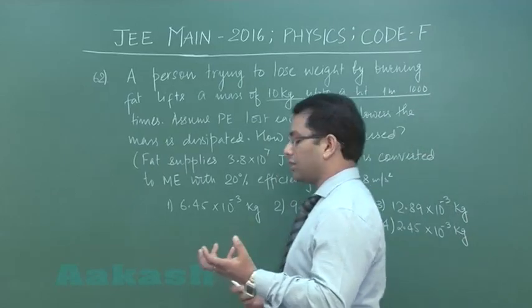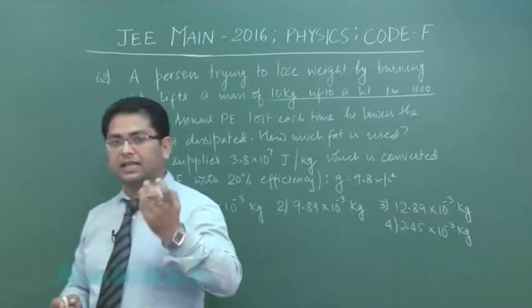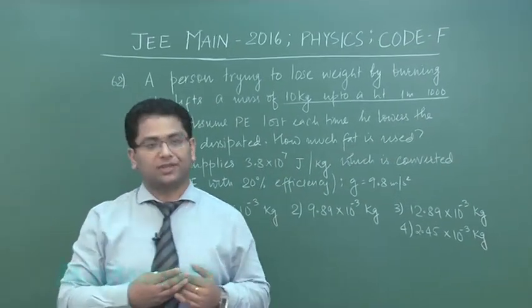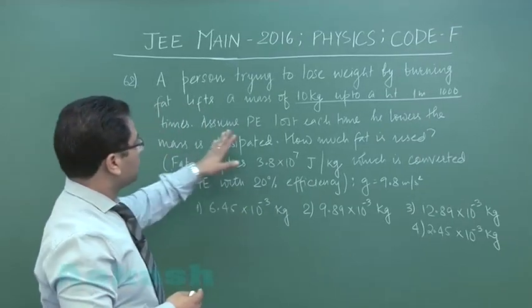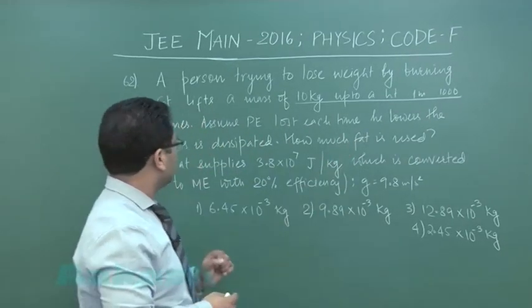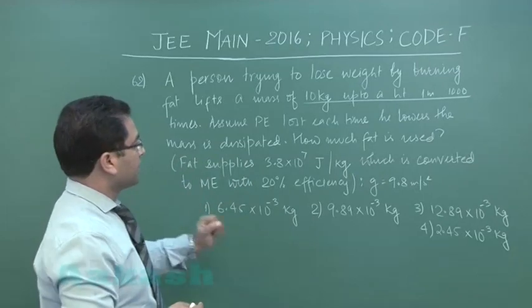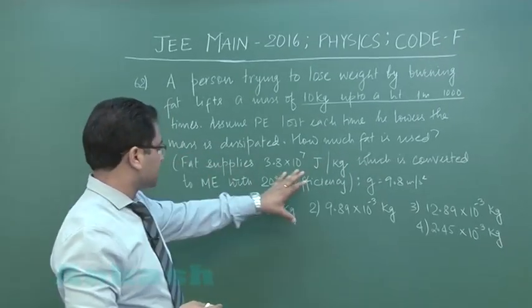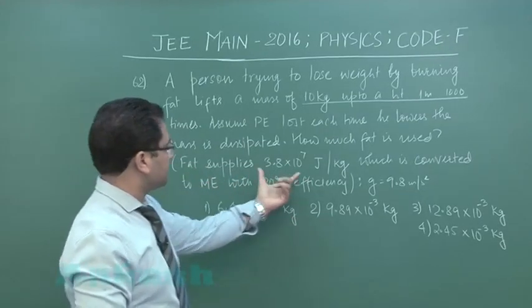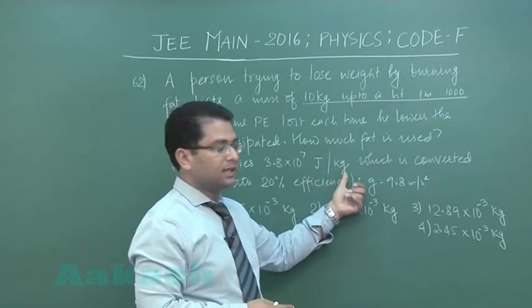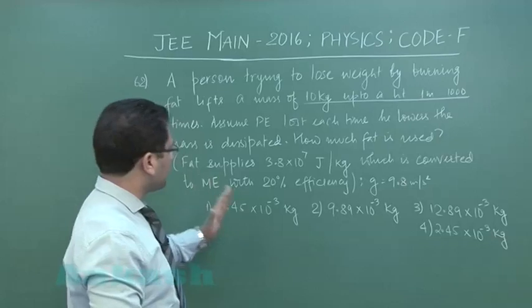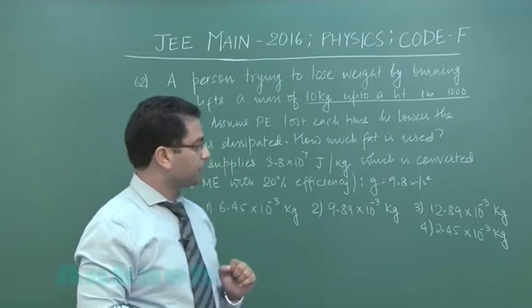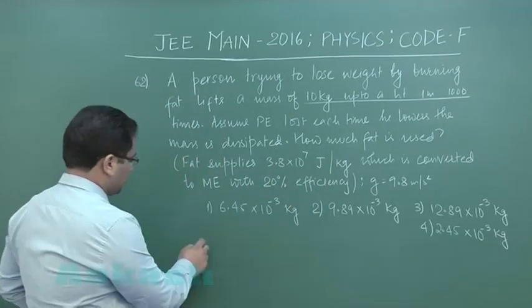A 10 kg block is being raised to a height of 1 meter, and the process is repeated for 1000 times. Assume potential energy lost each time he lowers the mass is dissipated. How much fat is used? The conversion part has been given here: fat supplies this much joules of energy per kg, which is converted to mechanical energy with 20% efficiency.